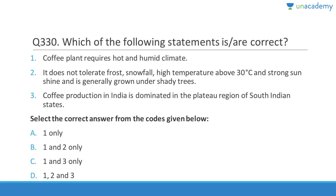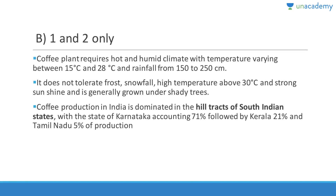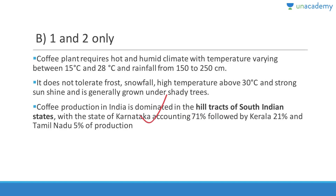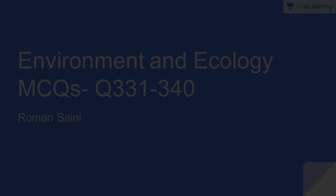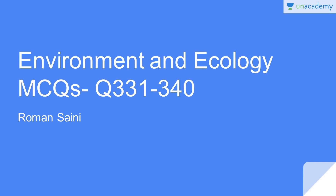Question 330: Coffee plants require a hot and humid climate, do not tolerate frost, snowfall, high temperatures above 30°C, or strong sunshine, and are generally grown under shady trees — correct. Coffee production in India is dominated in the hill tracks (not plateau region) of south Indian states. Karnataka accounts for 71%, Kerala 21%, and Tamil Nadu 5% of production.